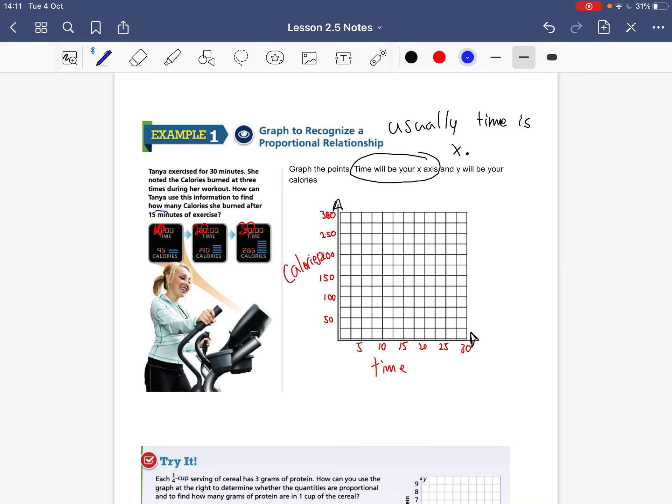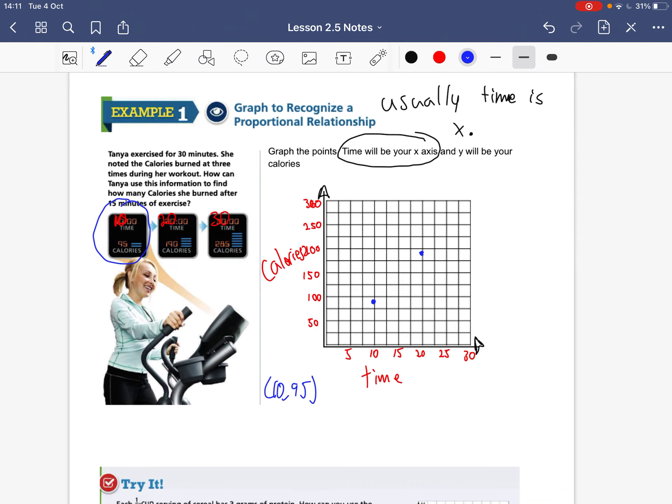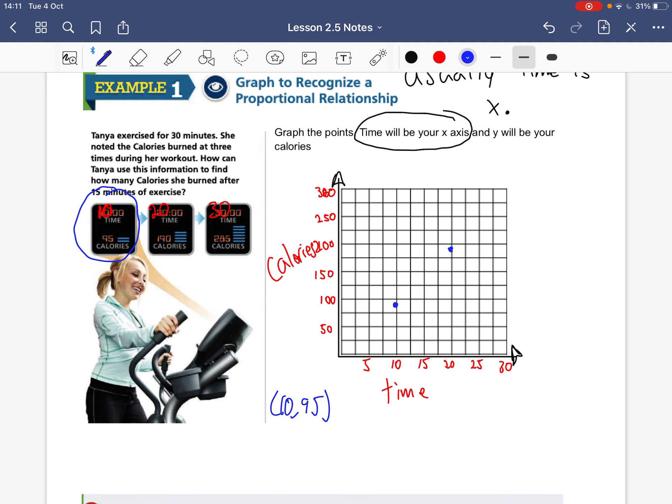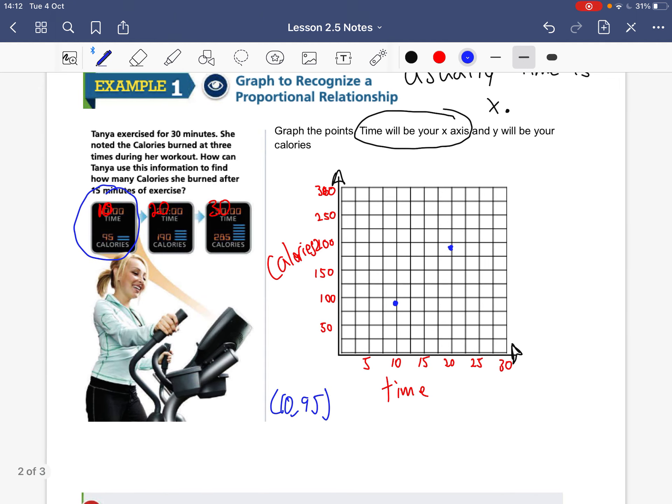So we're going to plot these points. 10, 95. So this would be 10, 95. So we're plotting these points at 10, 95 is about right here. And then 20, 190. So we're at 20. And we go up to 190, which would be just under 200. So it would be about right here. And 30, 285. 285 would be above 175. So about right here. So we've graphed it.